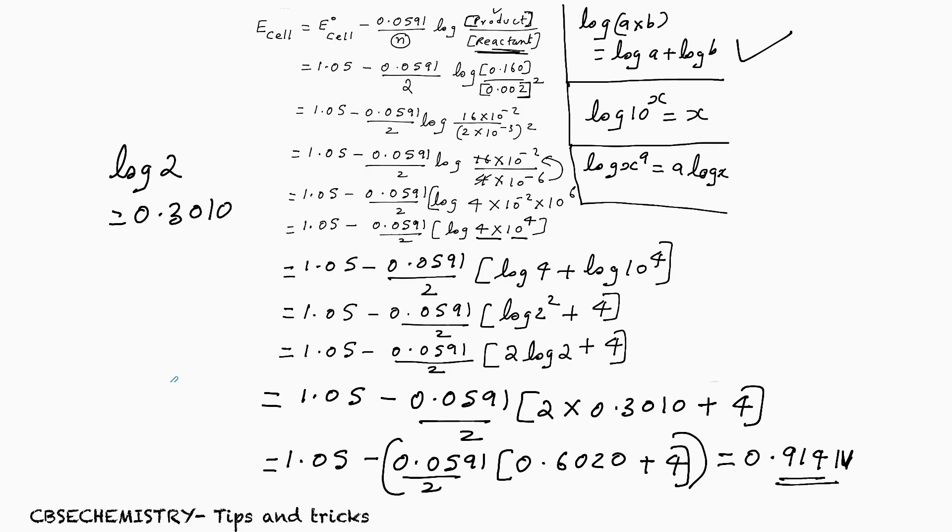Hope all of you understand. And remember this: log A × B is log A plus log B. Log 10^X is X. Log X^A is equal to A log X. Also, you remember this value: log 2 is 0.3010. If you remember this, log 4 will be also helpful. Log 4 is 0.6020. Better by heart this also. So that's it. Hope all of you understand.